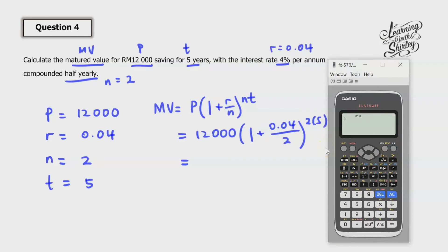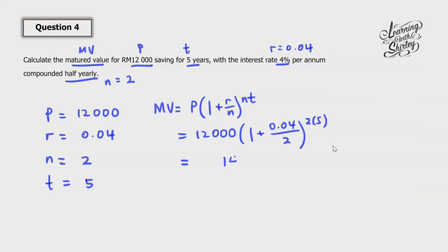We calculate inside the bracket first: 0.04 divided by 2, then plus 1, then to the power of 10 (since 2 times 5 is 10), then multiply with 12,000. So our answer is 14,627.93 RM. And this is the answer.